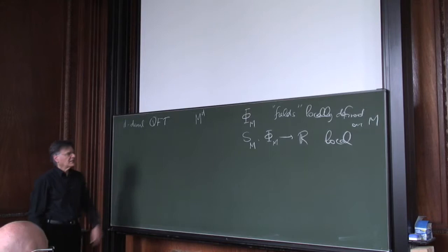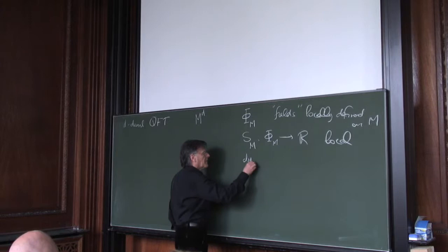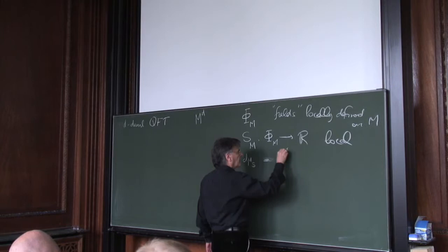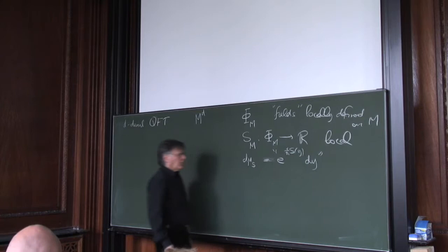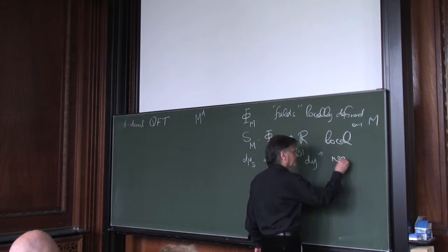Associated with this notionally, we want to define some type of measure, which formerly I said we write like this, where that's Planck's constant. From this point on I'm mostly going to make Planck's constant equal to 1, but I'll put it in there for a last time. This is meant to be a measure on the space of fields.